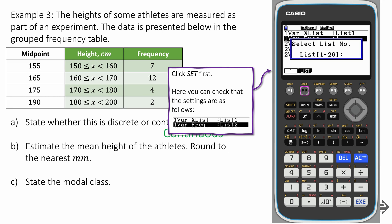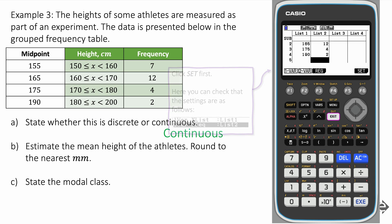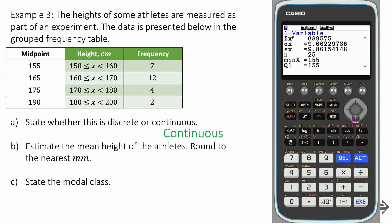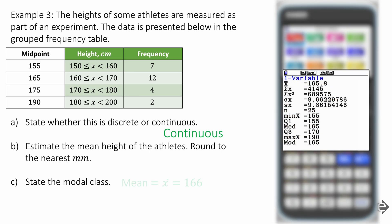When you're ready, you're going to go to calc, and change the settings, so that list two, the variable frequency, is set to list two. Like that. Go to exit, and then select one variable, as we did before. And we have all of the data that we wanted.